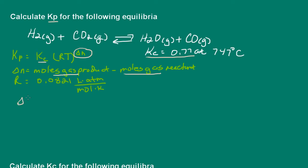So first let's calculate delta N. And we have one mole of water vapor and one mole of carbon dioxide gas for a total of two moles in the products. And in the reactants, we have one mole of hydrogen and one mole of carbon dioxide. So that would be two moles in the reactants. So delta N would be zero. Well, I think I can stop right here, because watch what happens.